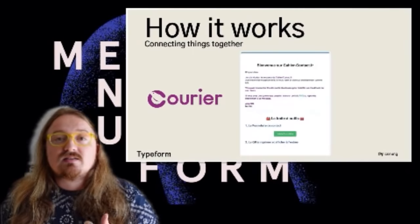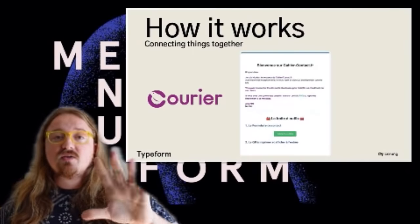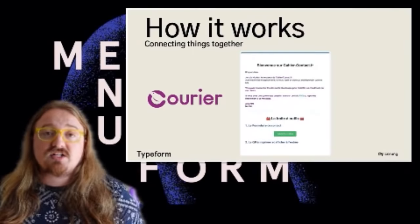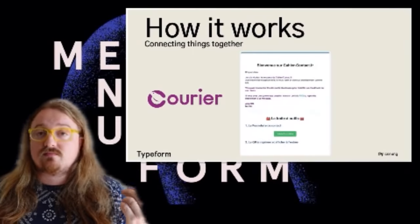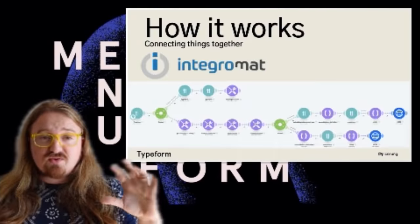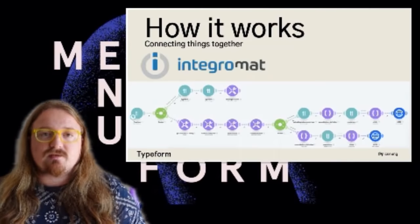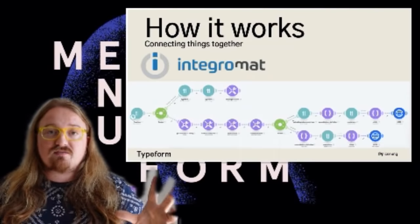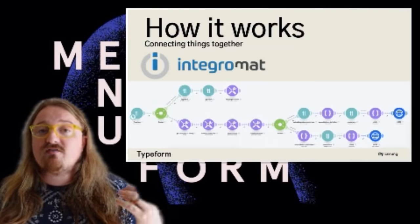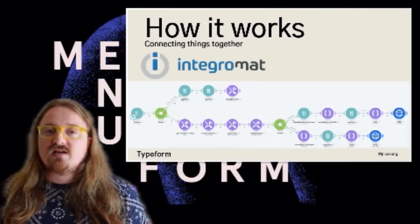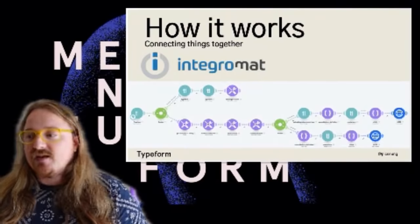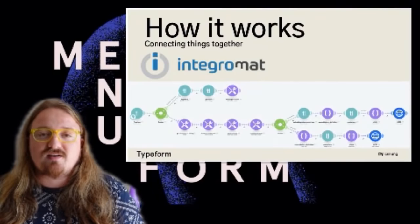The only interaction the restaurant owner has is receiving one email — saying everything is set up, here's the form, here's the flyer to print, and here's a link to access the data. For the email I used Courier, which lets you build beautiful notifications. To glue everything together I used Integromat, a workflow tool that is entirely point-and-click — no code required. As a developer, every time I can save time I appreciate that.